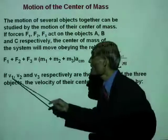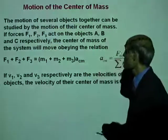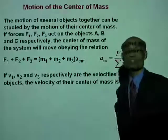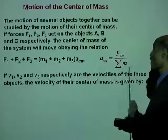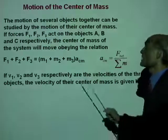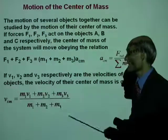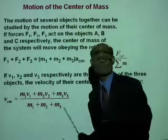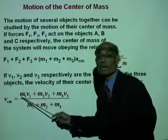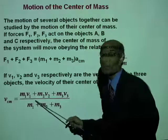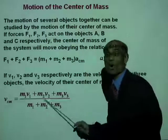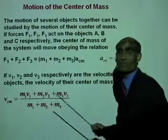If V1, V2, and V3 are the velocities of the three objects respectively, then the velocity of their center of mass is related to these velocities. The velocity of the center of mass is: V_cm equals M1·V1 plus M2·V2 plus M3·V3, all over M1 plus M2 plus M3.